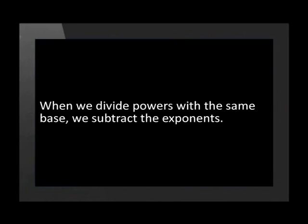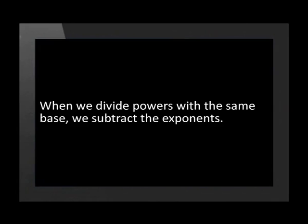Now that we've revised how to multiply powers that have the same bases, let's look at the law for dividing powers. When we divide powers with the same base, we subtract the exponents. So for positive base x and for integer exponents m and n, we have the general rule: x to the power of m divided by x to the power of n is equal to x to the power of m minus n. Once again, the base stays the same but the exponents have been subtracted. Now we can combine the laws for multiplying and dividing powers to help us simplify exponential expressions.